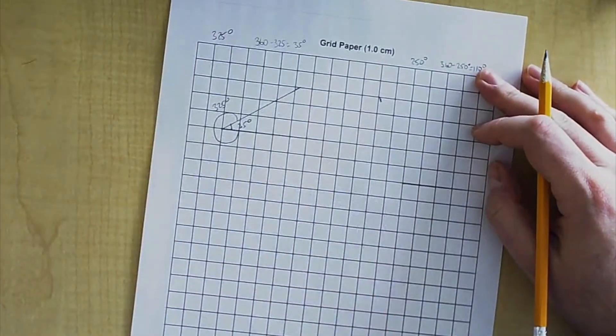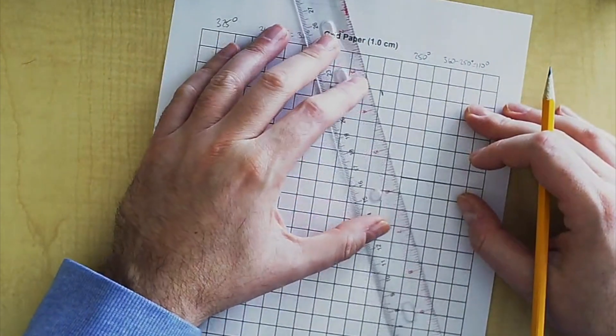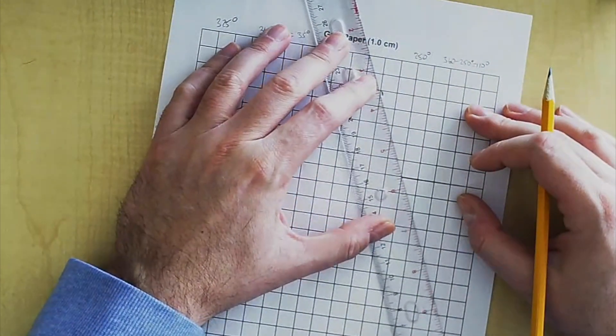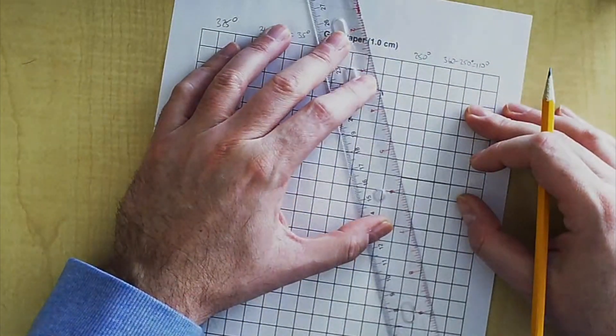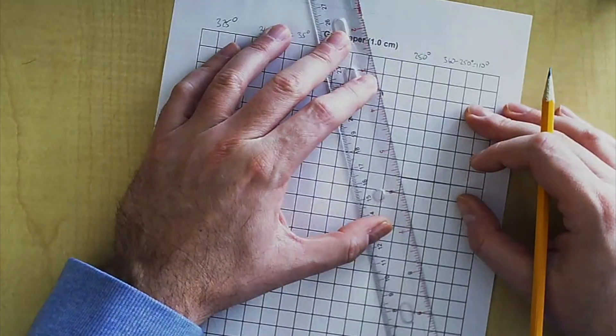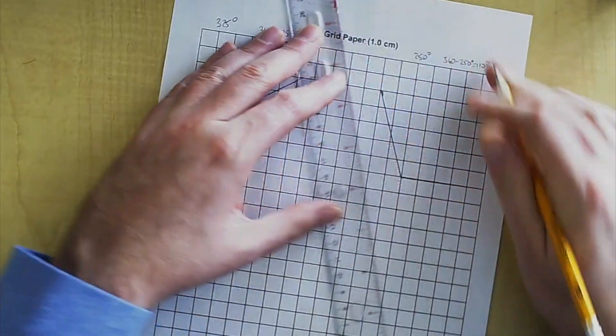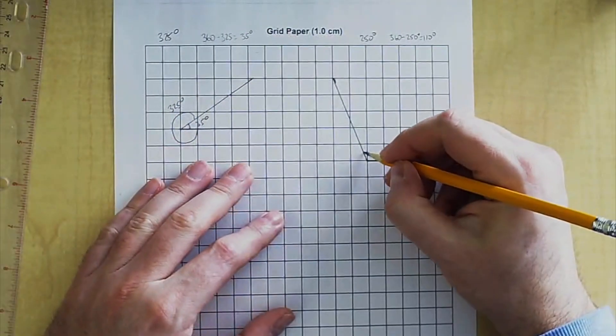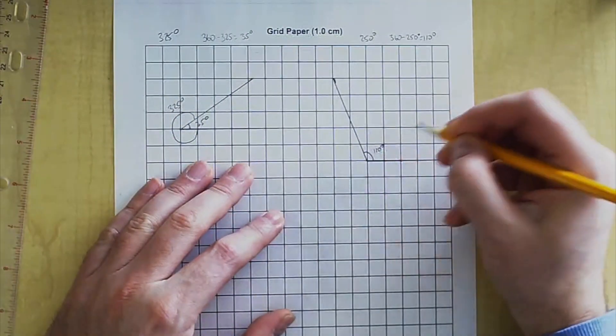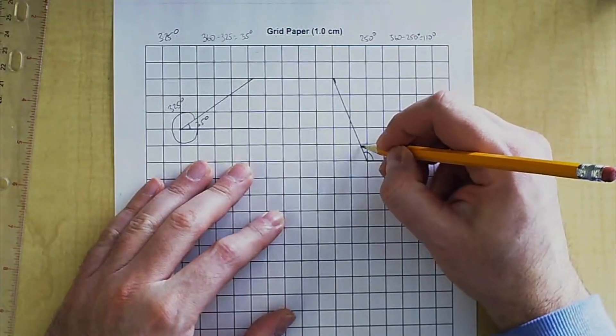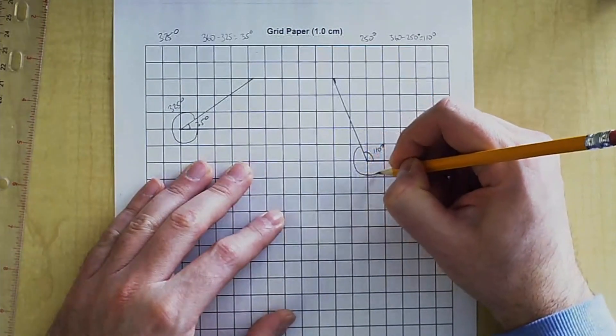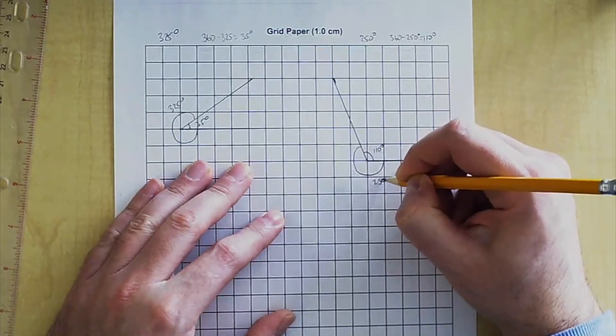And 110 is over here. Because 110 is an obtuse angle, it has to be bigger than 90 degrees. Connect your line to the little dot that you made, like this. You have now drawn a 110 degree angle. But if it's asking for 250, this one here is 250 degrees.